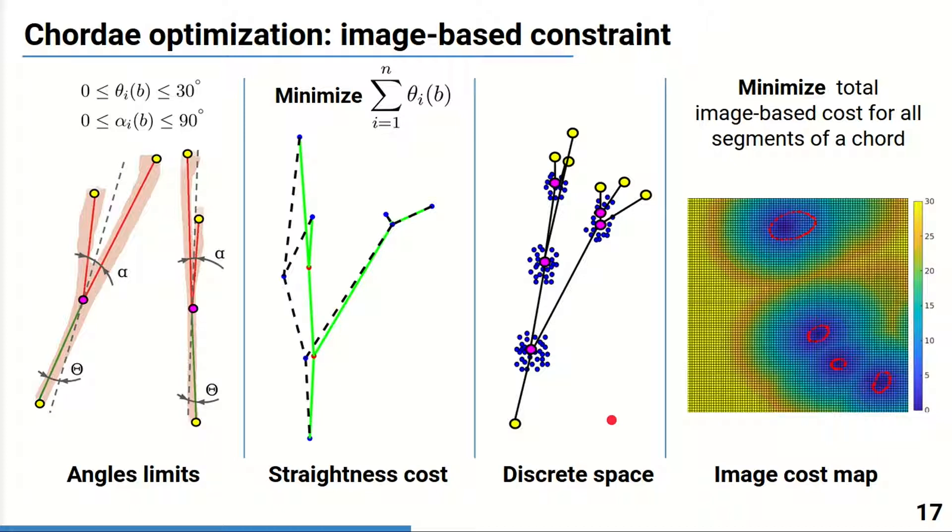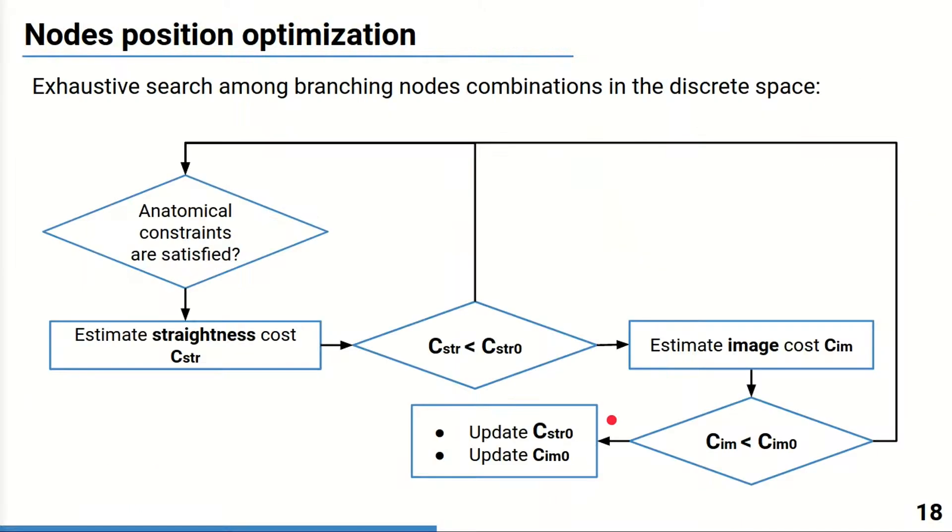We perform an exhaustive search among different combinations of branching node positions, and we choose to order the constraints while privileging the mechanical constraint, and only after apply the image-based one.